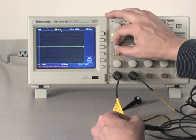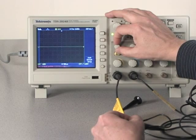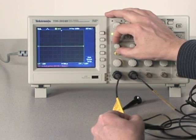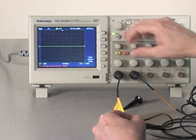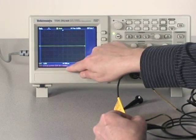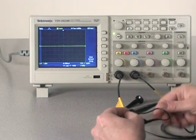The reason it works on this scope is that the vertical position reads out directly in volts. So if I center the trace on the screen, the vertical position now reads zero volts.